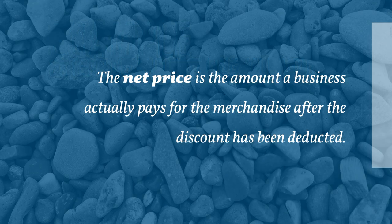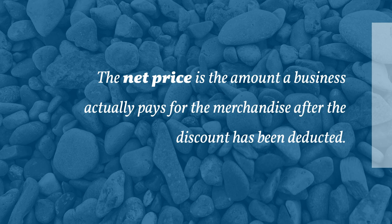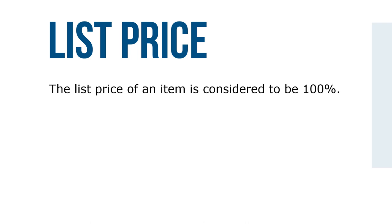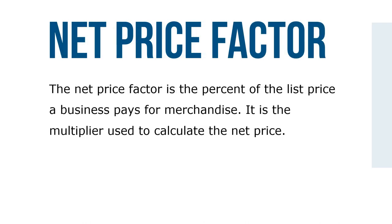The net price is the amount a business actually pays for the merchandise after the discount has been deducted. Frequently, merchants are more interested in knowing the net price of an item than the amount of the trade discount. In that case, the net price can be calculated directly from the list price without first finding the amount of the discount. Net price is calculated by subtracting the amount of the trade discount from the list price. The list price is considered to be 100%, so with a trade discount of 40%, the net price will be 60% — these two must equal 100%. This 60% is the net price factor, usually written in decimal form, and it is the percent of the list price a business pays. It is the multiplier used to calculate the net price.